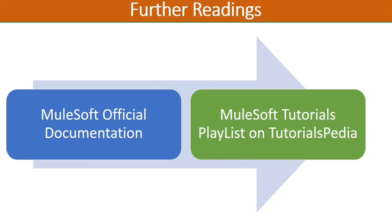That's it from this simple yet quite useful tutorial. I'm sure it will help you understand the basics and power of the cache scope provided by Mule 4. You can further play with it, try different configurations, and use object stores to explore more. It's quite useful whenever you need to entertain client requests faster with higher throughput and lower response time. For more MuleSoft tutorials, refer to the other videos in this playlist and the official MuleSoft documentation. Please subscribe and feel free to write questions in the comments. Thanks a lot!